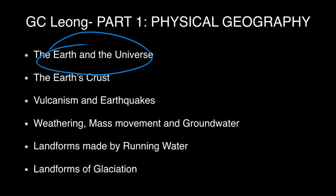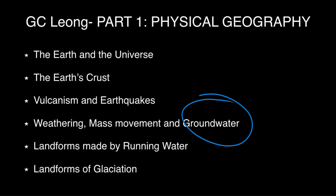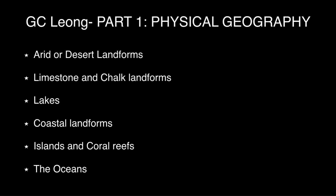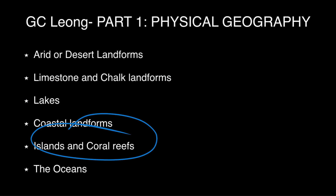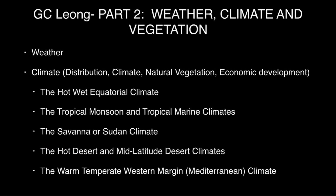Part One of GC Leong includes: Earth and the Universe — one question is sometimes asked; Earth's Crust — definitely asked; Volcanism and Earthquakes — very very important, mentioned in the Mains exam syllabus; Weathering, Mass Movement, and Groundwater — all very important; Landforms made by Running Water — asked again and again; Landforms by Glaciation; Arid or Desert Landforms; Limestone and Chalk Landforms; Lakes; Coastal Landforms; Islands and Coral Reefs; and Oceans — all asked very frequently.